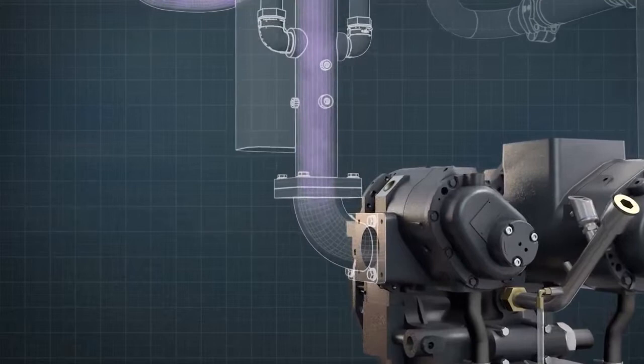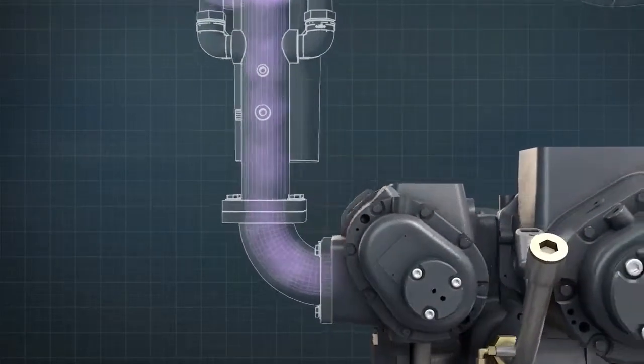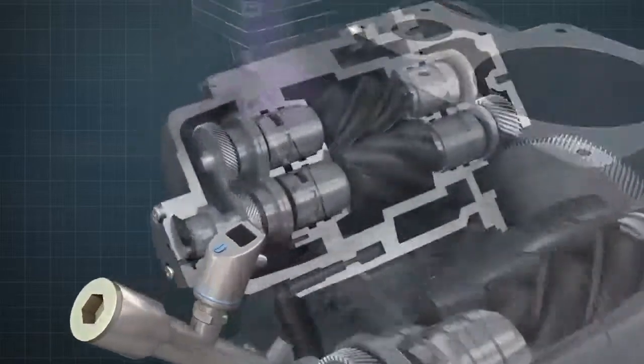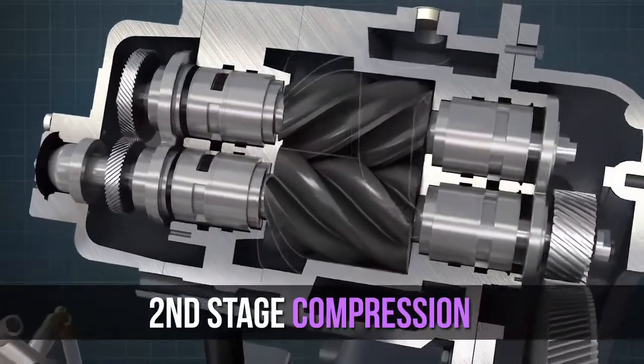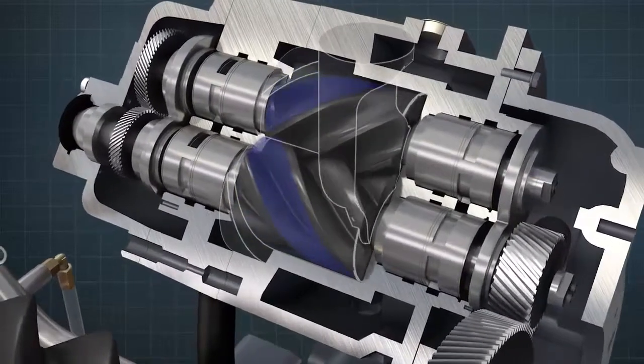The volume of the air is greatly reduced after first-stage compression, which means that the size of the second-stage rotors can be smaller. The second stage further compresses the air to the required pressure in the same manner as the first stage.